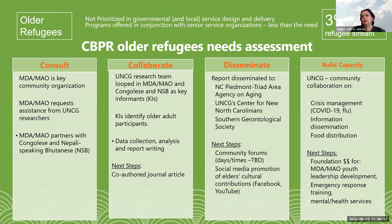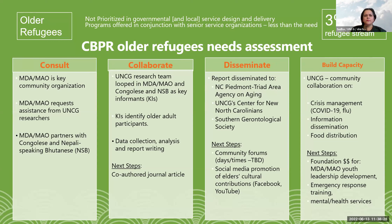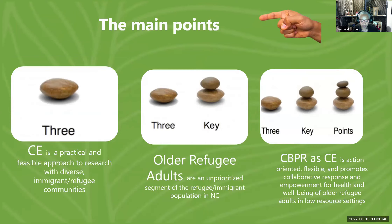All these communities are very low socioeconomic status and low resource, and we've had to be very creative in how we partner and use almost non-existent resources to conduct our work. In ending, we'd want to leave you with three main points: community engagement is a practical and feasible approach to research with diverse immigrant and refugee populations, particularly low resource communities; older refugee adults are an unprioritized segment of our population in North Carolina; and CBPR as a community engagement approach is action-oriented, flexible, promotes collaborative response, empowerment for health and well-being of older refugee adults in lower resource settings.